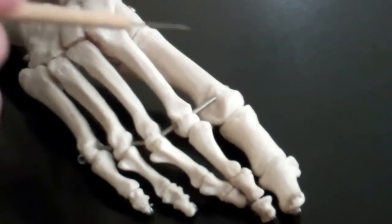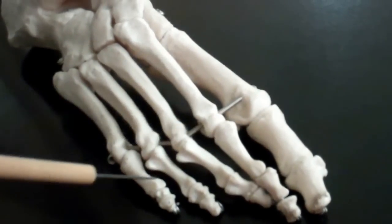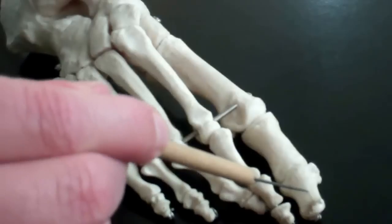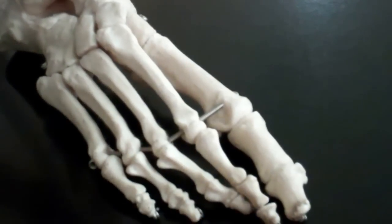At the end, we have phalanges. Those little wiggling phalanges are named the same way as on your hand. On the big toe, you have a proximal and distal. On the rest, you have proximal, medial, and distal.